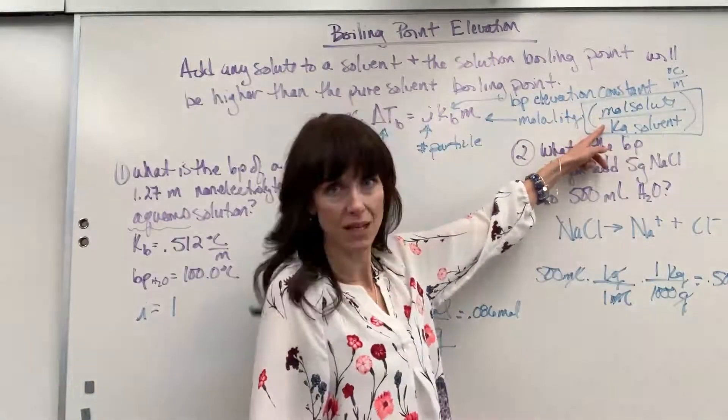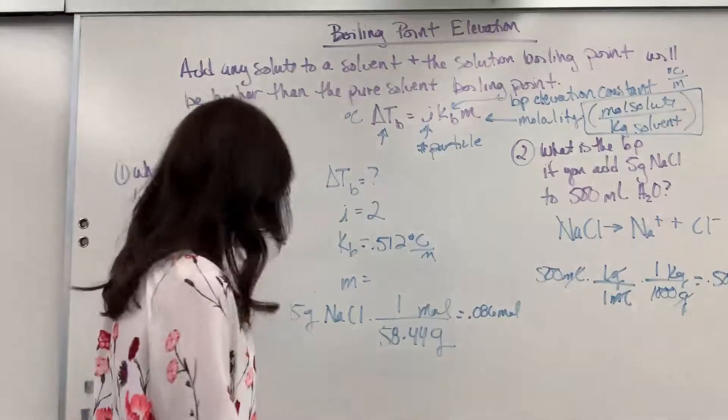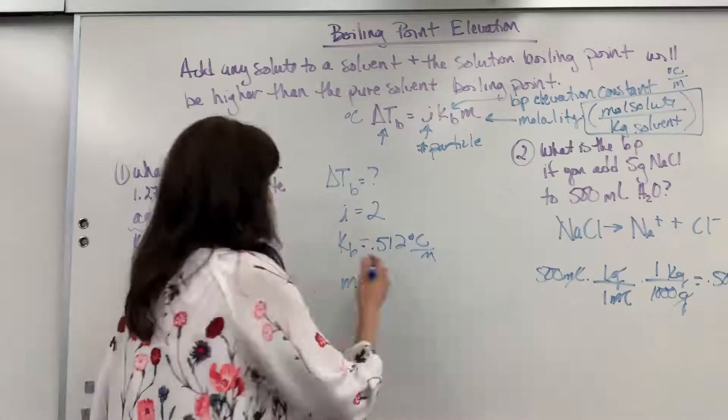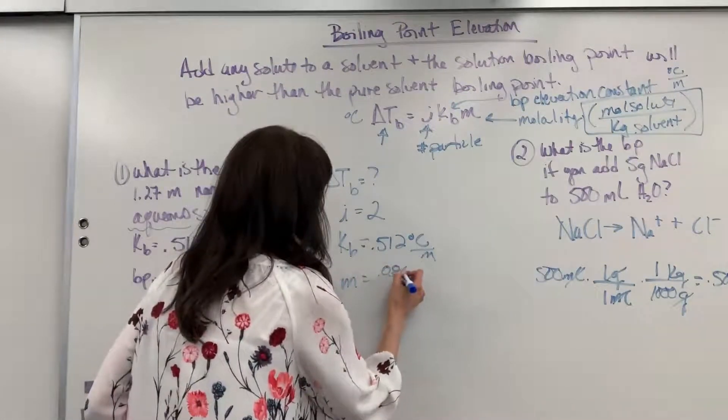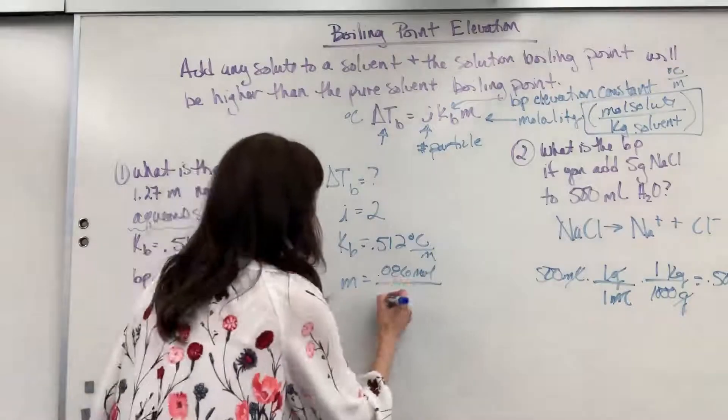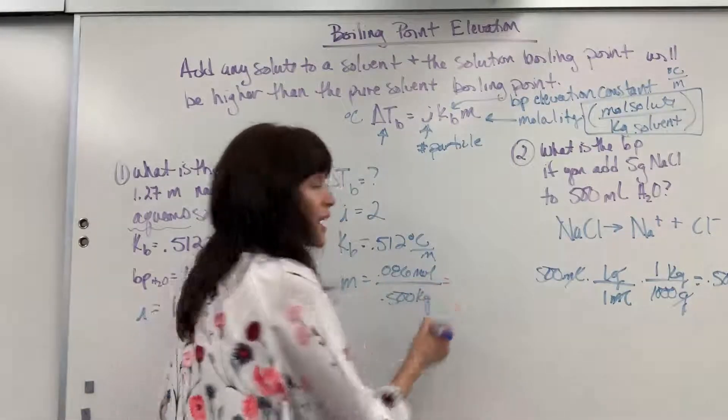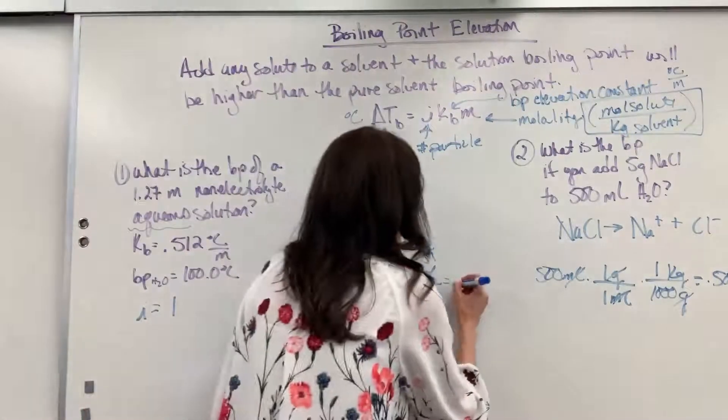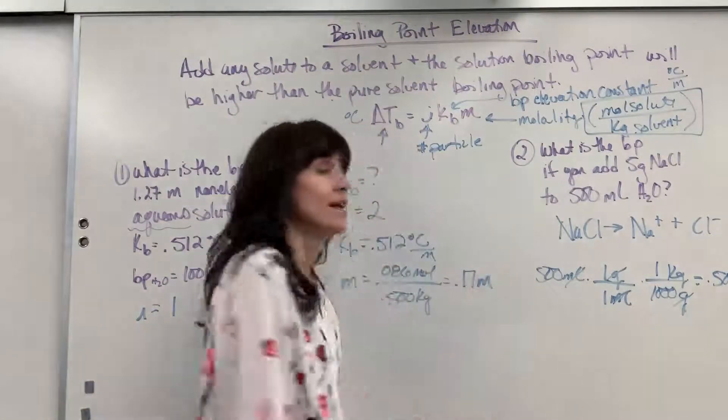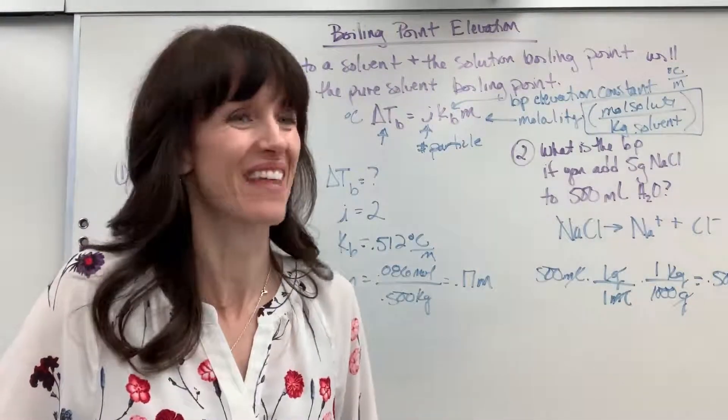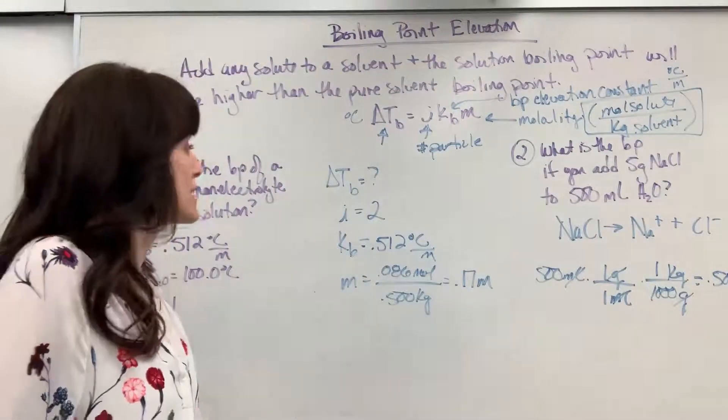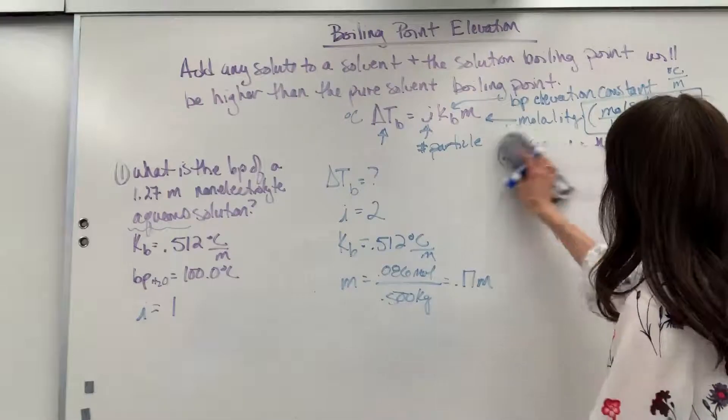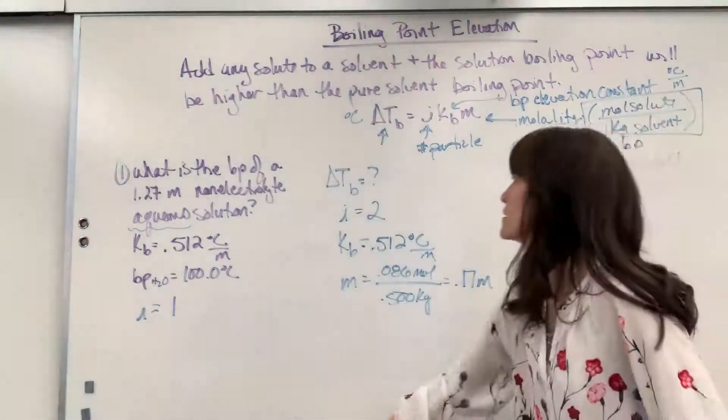Now I have the kilograms for the denominator. So let's go ahead and put this together. Molality is going to be that 0.086 moles divided by 0.5 kilograms. And when we divide that, we get 0.17 molal. So they made us work for that molality. Now we can just take all of our variables here and plug in.